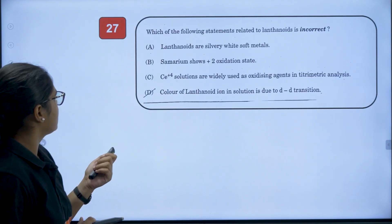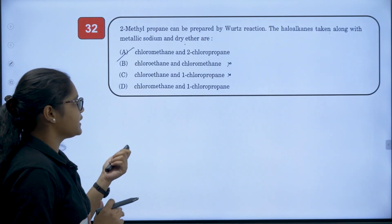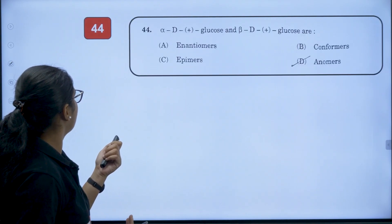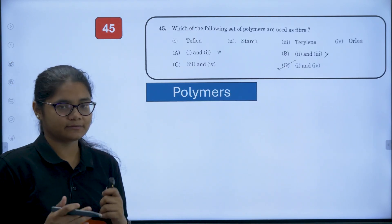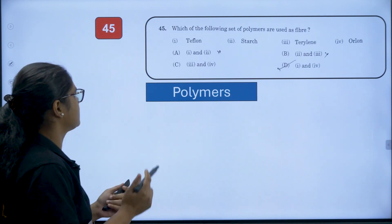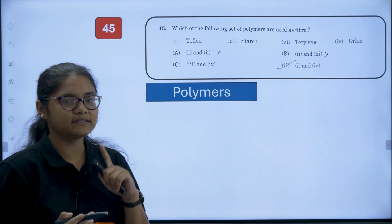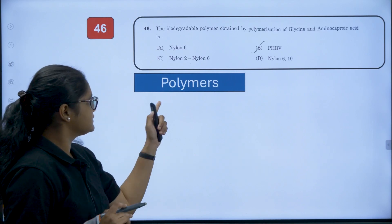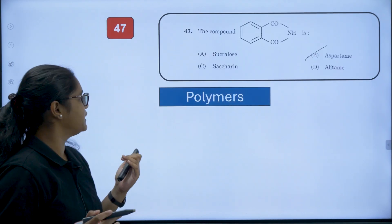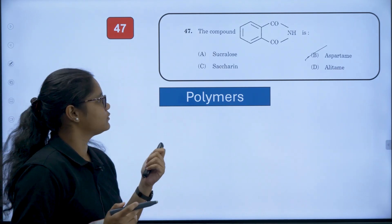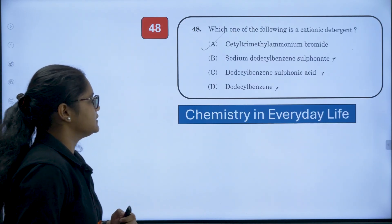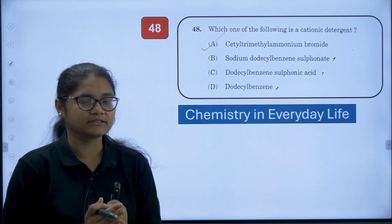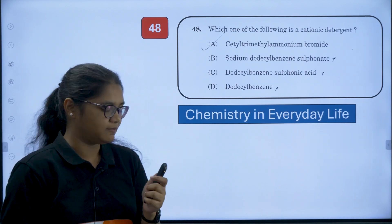The remaining questions in between are correct and from the reduced syllabus. Moving ahead, Polymers was also a deleted chapter. Question number 45, based on polymers, is deleted and will not be evaluated. Question number 46 is also from the Polymers chapter and will not be evaluated. Question number 47 is also from Polymers and will not be evaluated. Question number 48 is from Chemistry in Everyday Life, which was also a deleted chapter, so it will also not be evaluated.